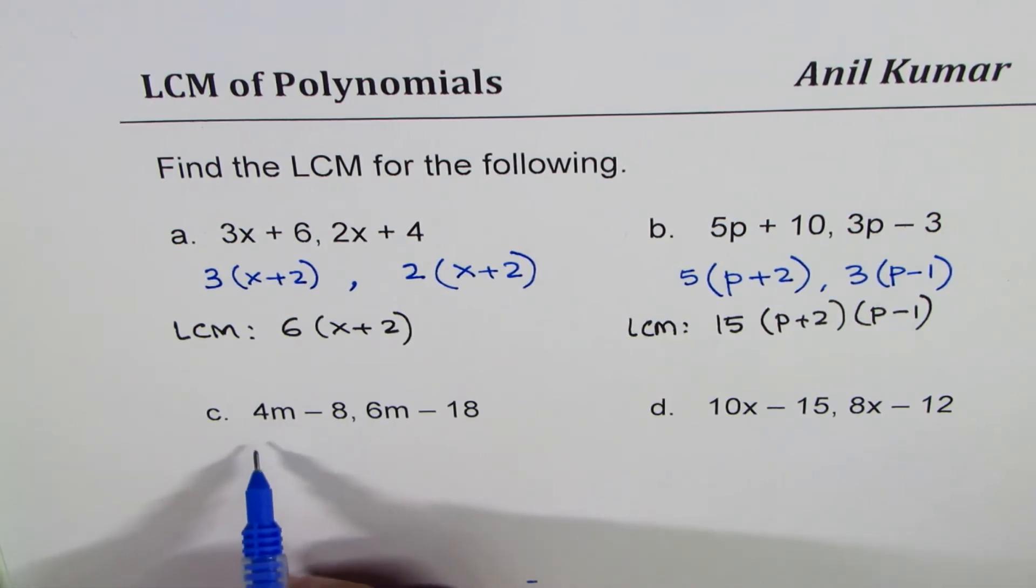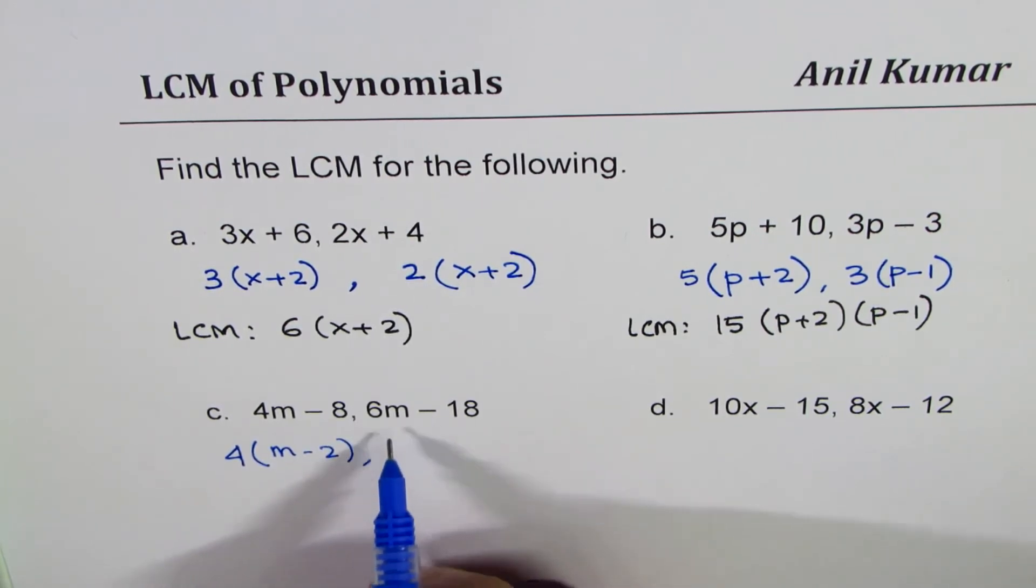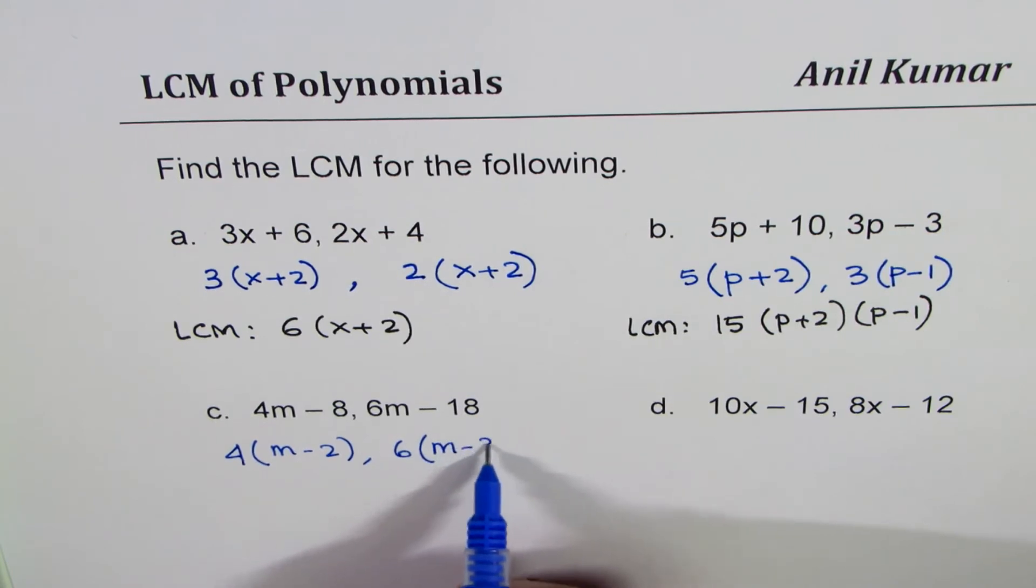4m minus 8, 4 is a common factor, we get m minus 2. And here 6m minus 18, 6 is a common factor, m minus 3.